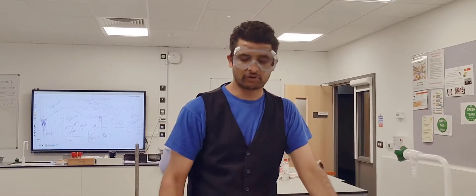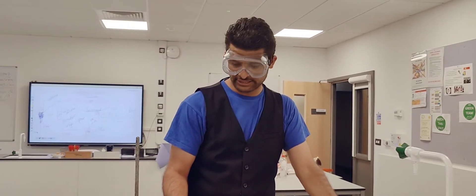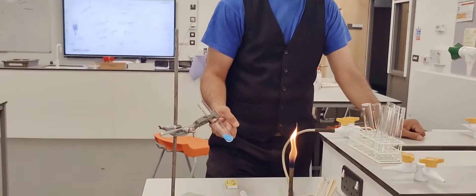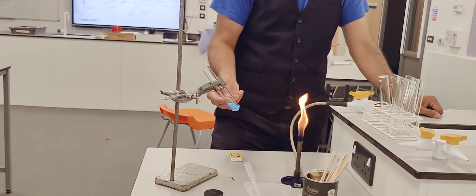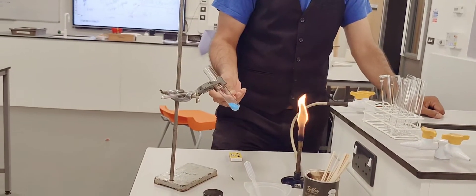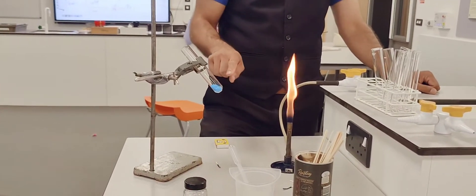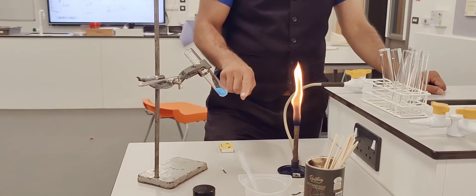Alright guys, we have copper sulfate hydrated, you can see that it is blue colored powder. These are beautiful crystals, it's not in powder form. What we are going to do is we are going to heat it up because this part is going to be endothermic.